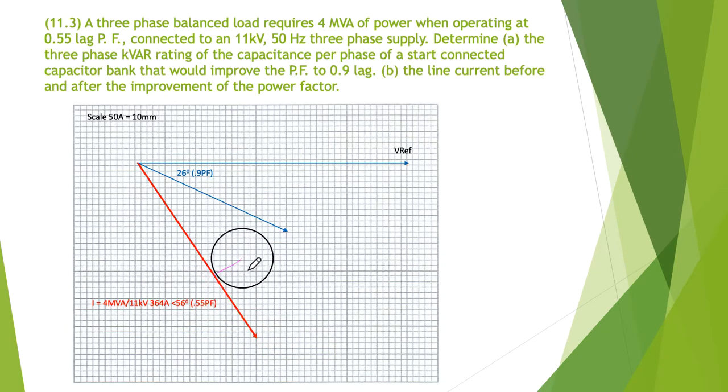We would like to get this phasor up to that position, so we want to reduce this angle here to this angle. At the moment we don't know how long this phasor will have to be, so we simply project it out at the 26 degrees nice and long.